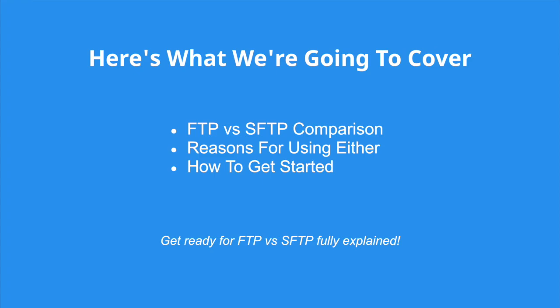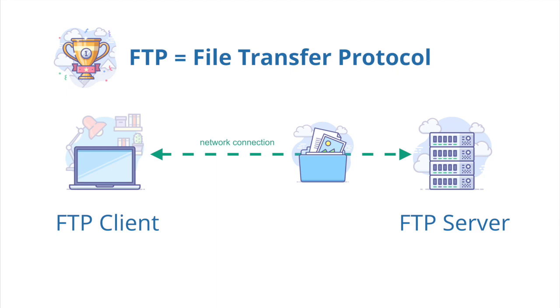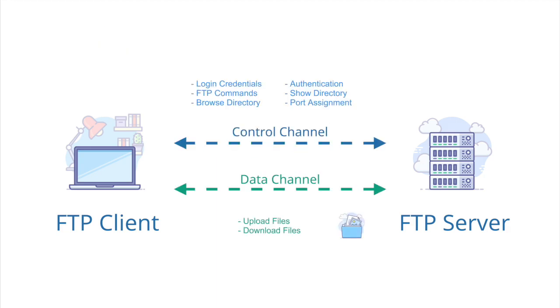First we'll look at FTP and SFTP to find out what the differences are, then a quick review of what each protocol is best for. First, FTP, known as File Transfer Protocol, is the standard for transferring files between a client and a server on a computer network. In short, FTP opens a control channel and a data channel to transfer data between two computers over an internet connection.